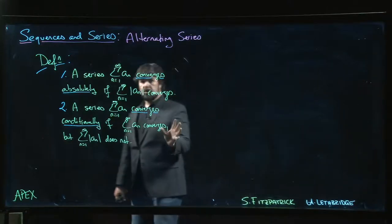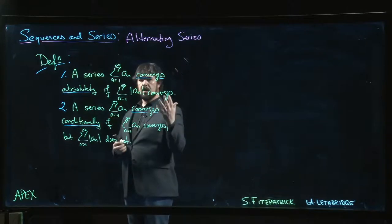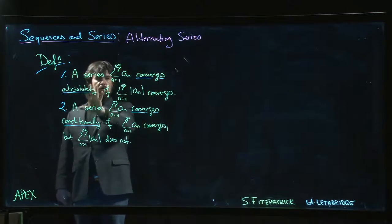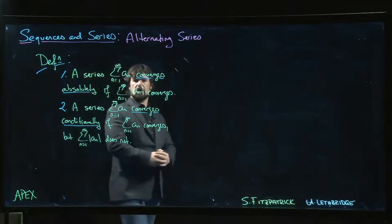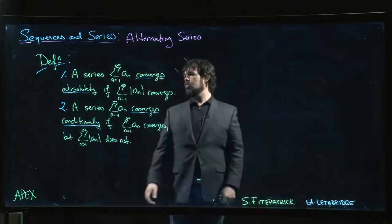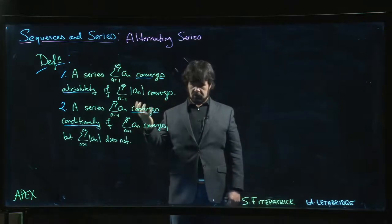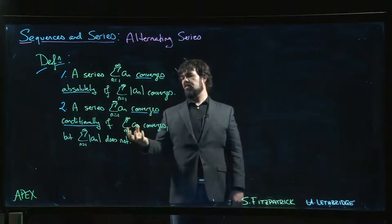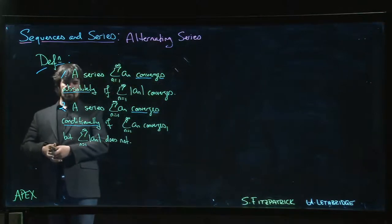We're going to introduce a little more terminology here and talk about convergent series. We have two different types of convergence: absolute convergence versus conditional convergence. A series converges absolutely if you can take the absolute value of every term and the series still converges. It converges conditionally if the series converges, but once you take the absolute value it no longer converges.